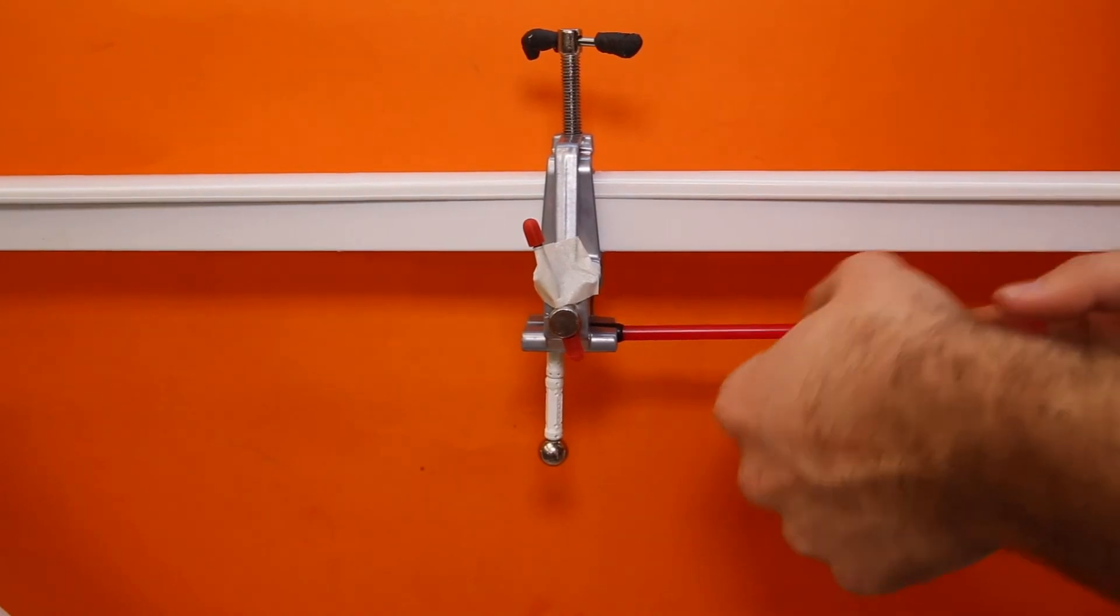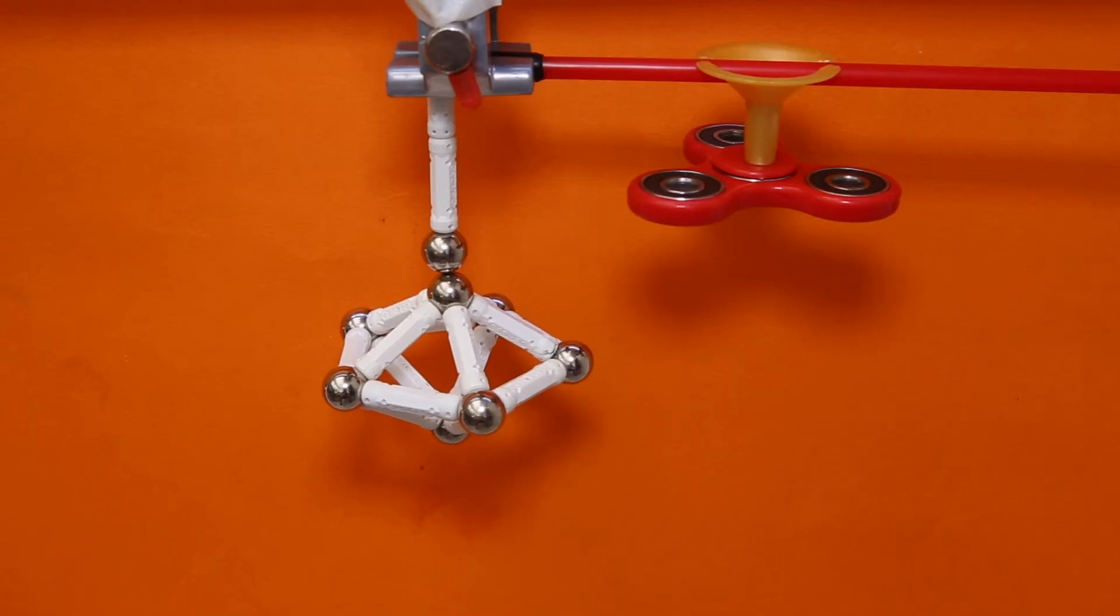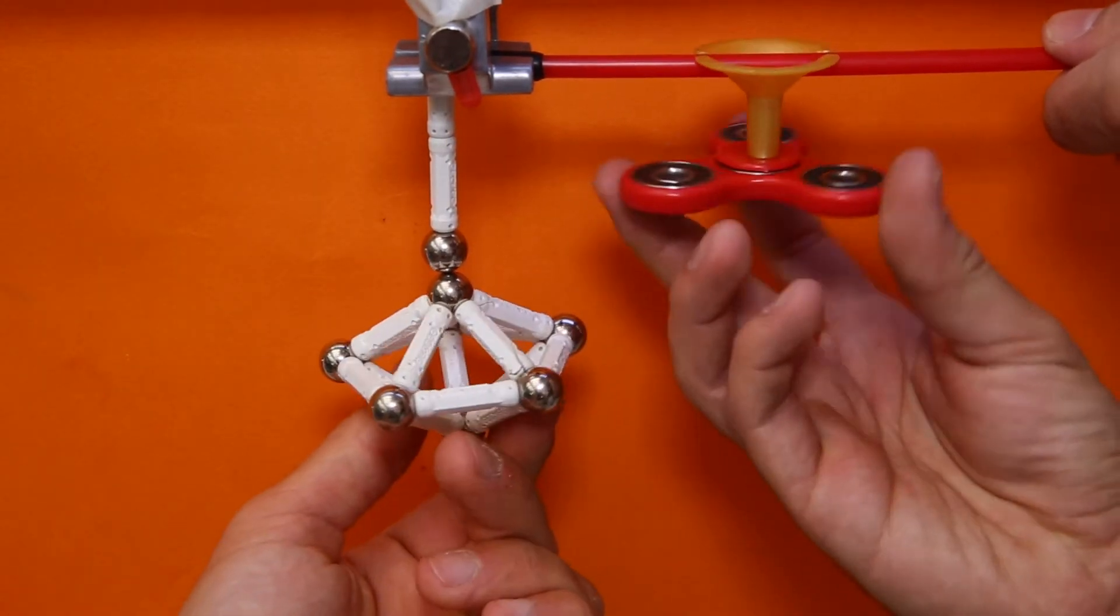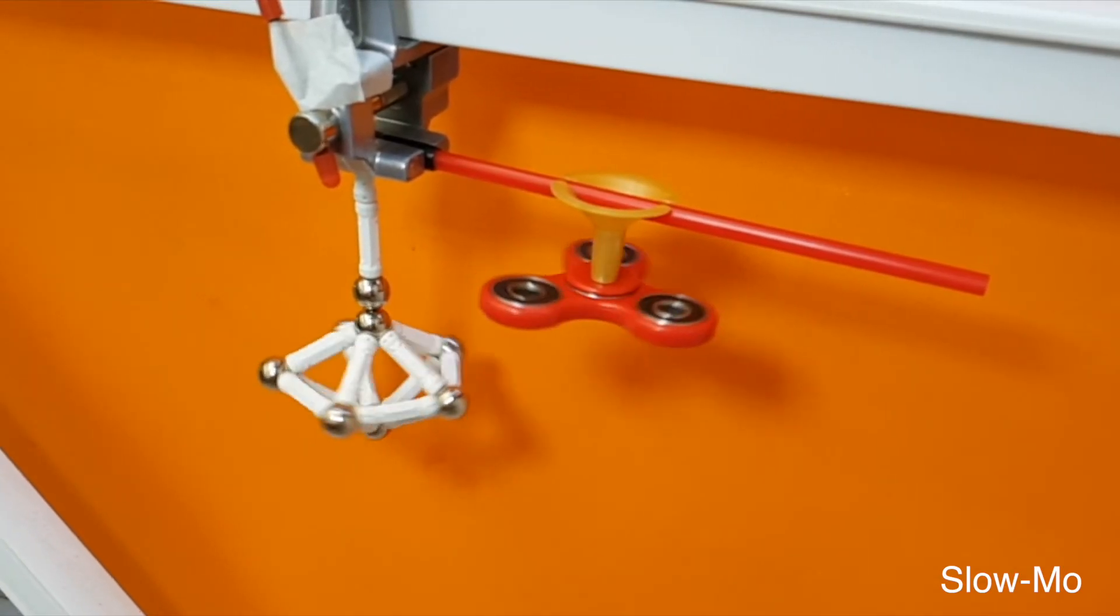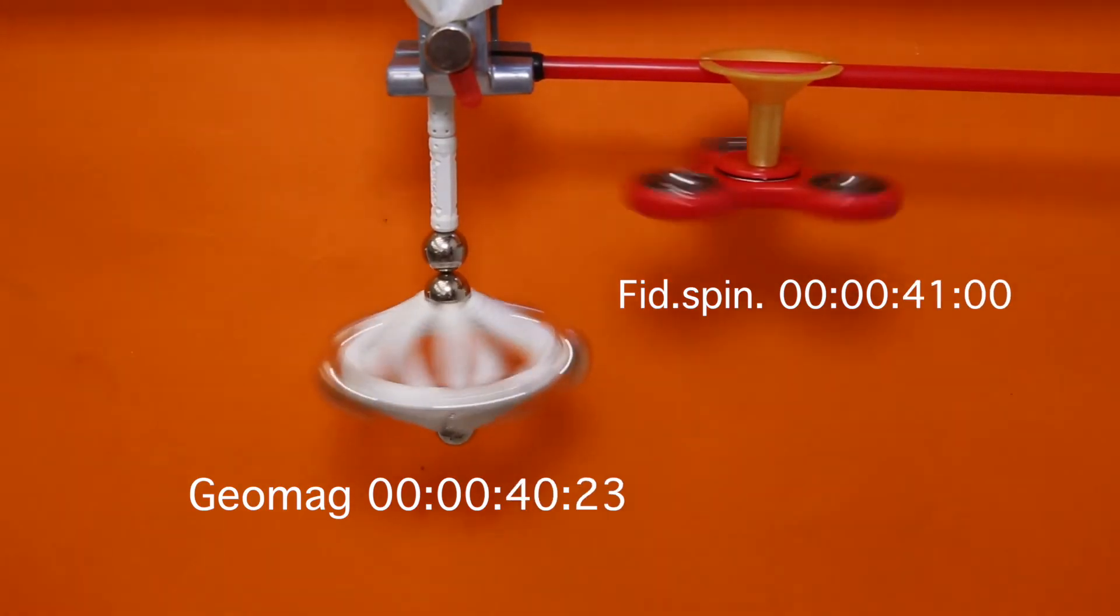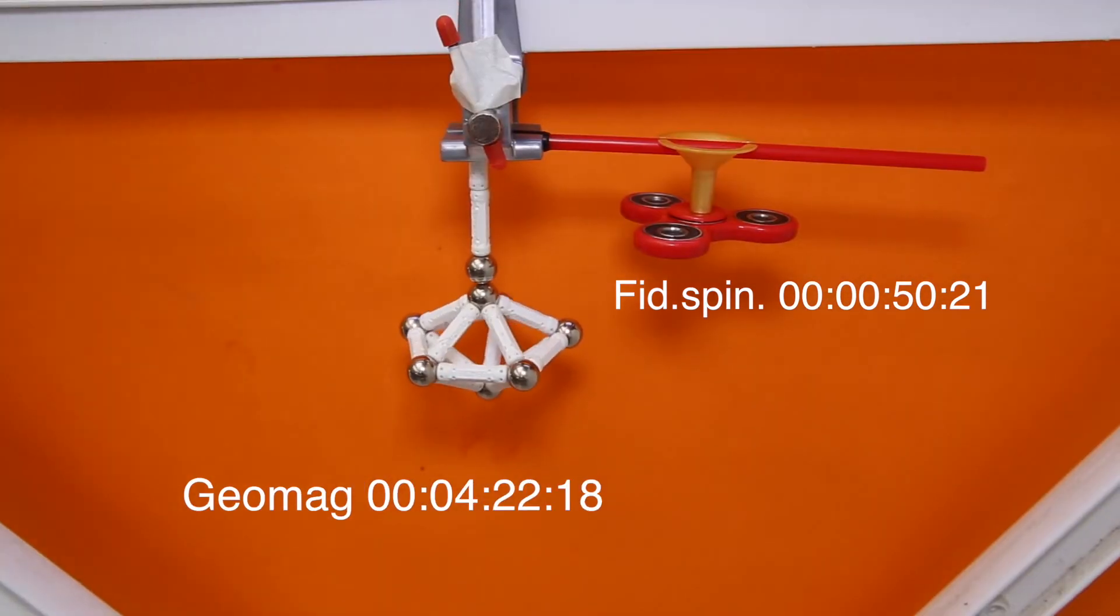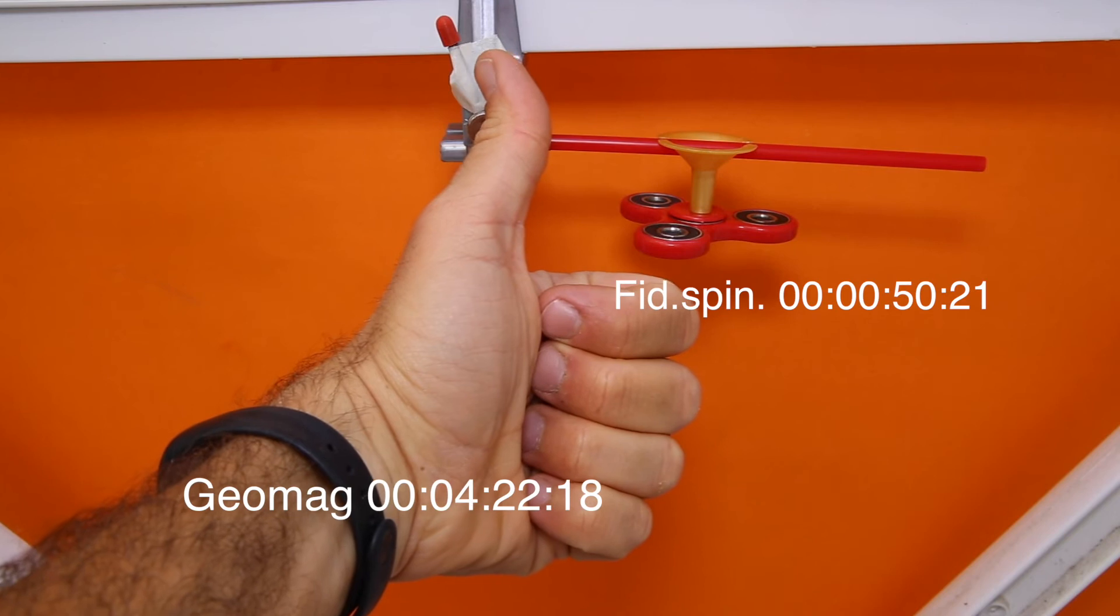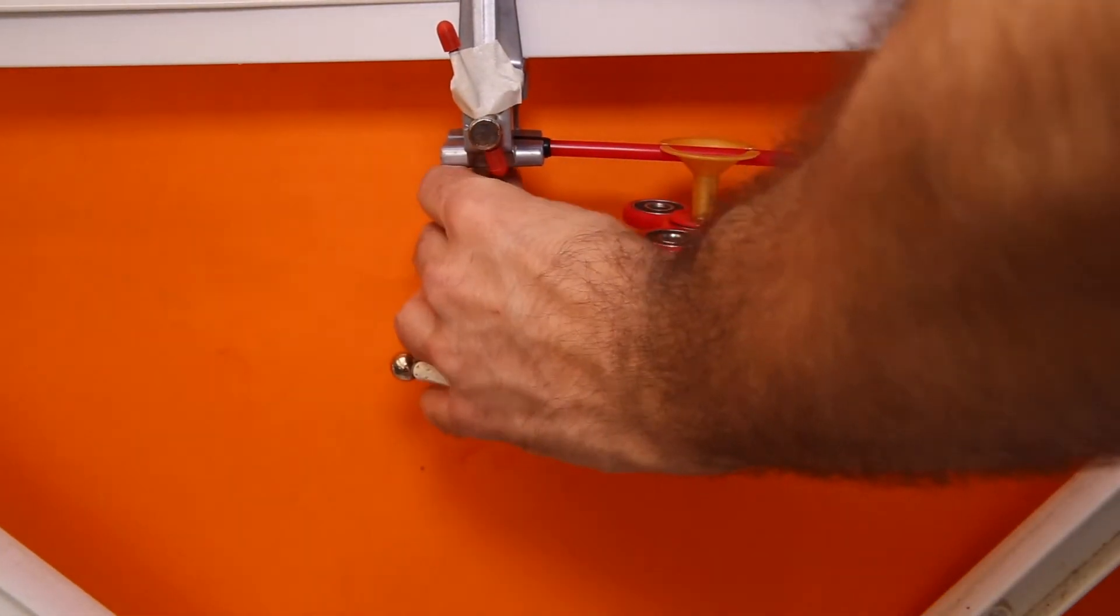We only have to spin the structure to make it turn. As you can see, the electromagnetic field is more durable over time than the ball bearings. That is the conclusion of the video.